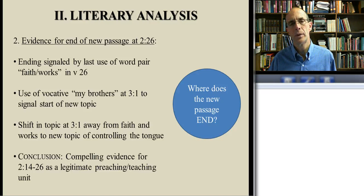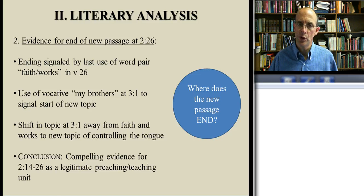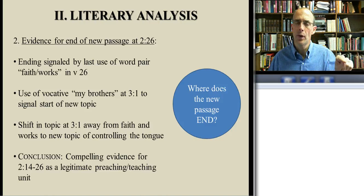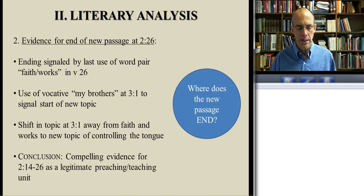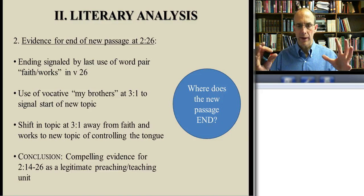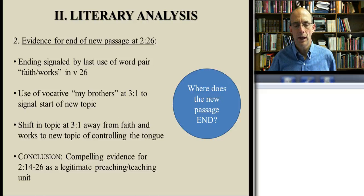The end of the passage at 2:26 is not so debatable. All commentators recognize all kinds of clues that our passage ends there. We have the end of the word pair of faith and works. In 3:1, we have yet another vocative indicating a shift to a new topic. Also, forms supplements but does not supplant content: when we look at the content, there is quite a shift in chapter 3. We lose the discussion on faith versus works, and suddenly we get the business of the tongue. All of that pulled together, we have compelling evidence that the unit ends at 2:26 — a fixed unit of 2:14-26, even though there are connections with the preceding part of the chapter.